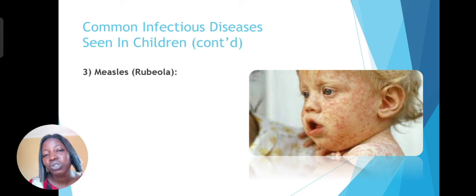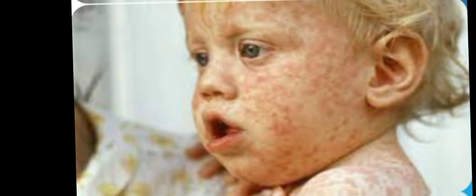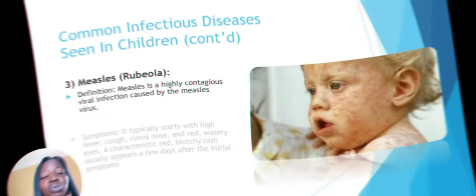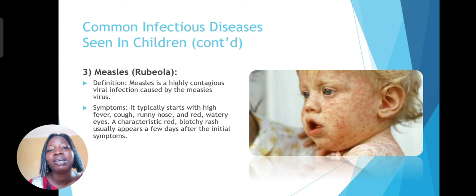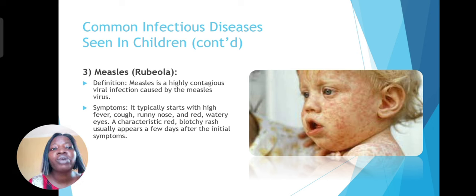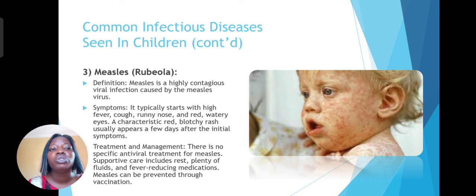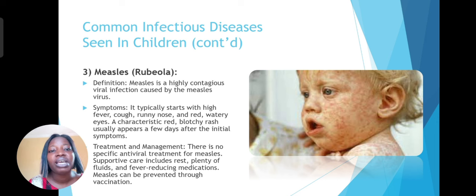Then we have measles. Measles is different from chickenpox — the rashes are different. It is highly contagious as well, caused by the measles virus. Symptoms are similar to chickenpox when it starts — high fever, cough, runny nose, red and watery eyes — but the rash here is a red, blotchy rash which usually appears after the initial symptoms have already manifested. There is no specific antiviral treatment for measles, but it can be prevented through vaccination. Measles vaccination is very important to get for children.